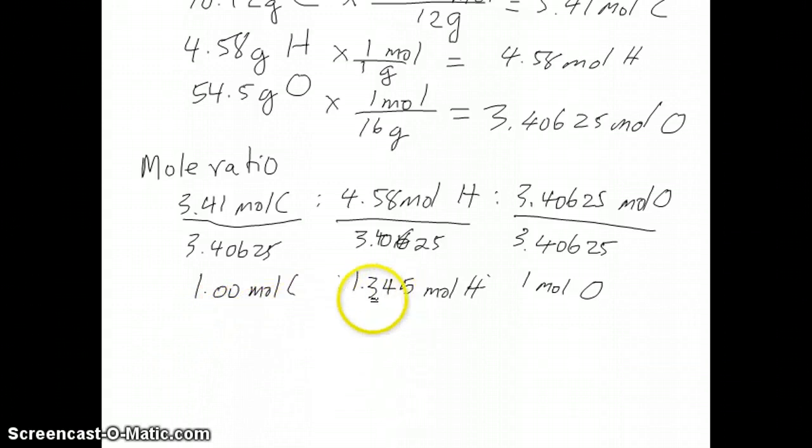Now, these are not whole numbers still because your hydrogen is still not a whole number. So what you have to figure out here is how do I convert this hydrogen to a whole number? If you think about 1.345, it's pretty close to 1.33, which is really just, if you think about writing this as fractions, this number is just close to 4 over 3 moles of hydrogen.